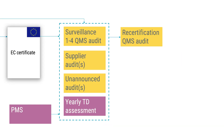Within 12 months of the certification date, the notified body needs to perform the first annual surveillance audit, and once again there should be a TD assessment performed in conjunction with this audit. The requirement is that technical documentation shall be sampled and assessed yearly until the full range of the manufacturer's devices has been covered. According to MDCG 2019-13, the depth of the TD assessment shall actually be the same for class 2a, 2b, and class 3.